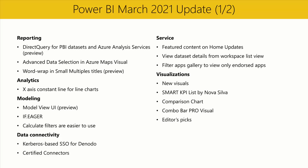In the modeling section, we have a few new updates to the preview of the new model view UI. We've added an indicator to make it easy to identify limited relationships between different source groups. These relationships have special behavior, which you can learn about in our documentation linked in the video description. We've also added tooltips to error icons. When you're in live connect mode, errors on measures will display an error icon in the fields list and in the model diagram, and when you hover over the icon, a tooltip will display more information about the error.